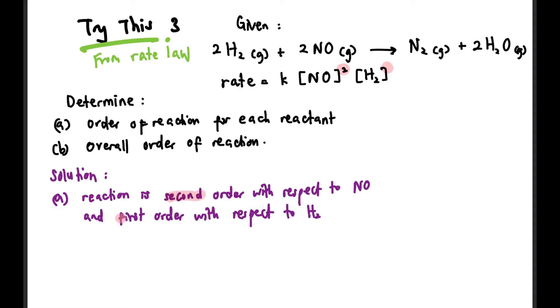Next, to find the overall order of reaction, we just add the powers of both orders. So overall order equals 2 plus 1, which equals 3.